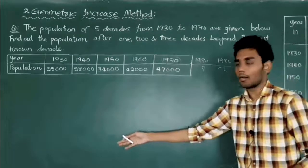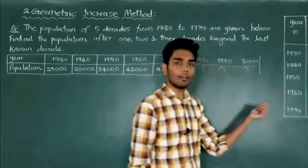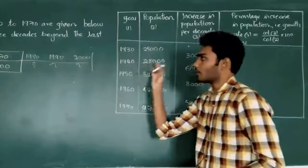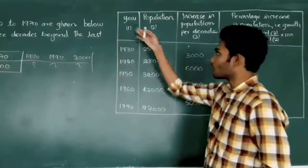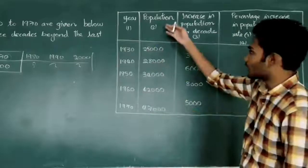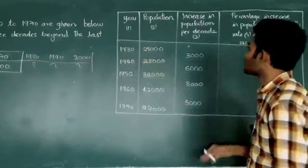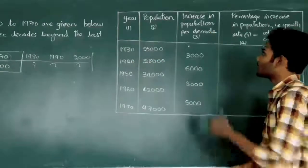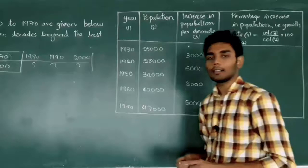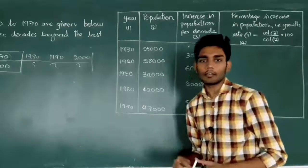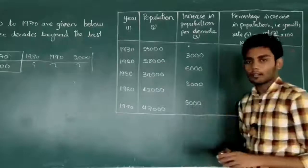I do not have enough space to extend the table, so I am extending it over here. I just extended the table given in the question. In the first column I have taken the year, in the second column the corresponding population for that year, and in the third column the increase in population per decade — just like we did in the arithmetic increase method.